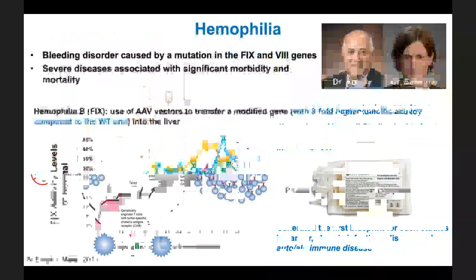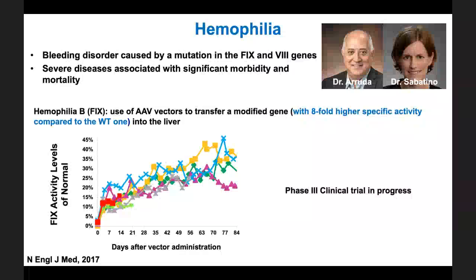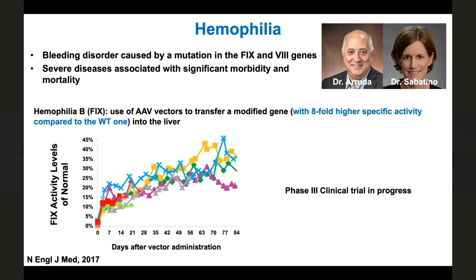There are also additional targets. Hemophilia is an important disease that has been studied at Penn for many years. Some of the leaders in this field are Dr. Ruda and Dr. Sabatino, who is the Vice Chair of GTV. They have been using primarily AAV vectors and modification of transgenes to increase vector activity and improve outcomes for hemophilia patients.